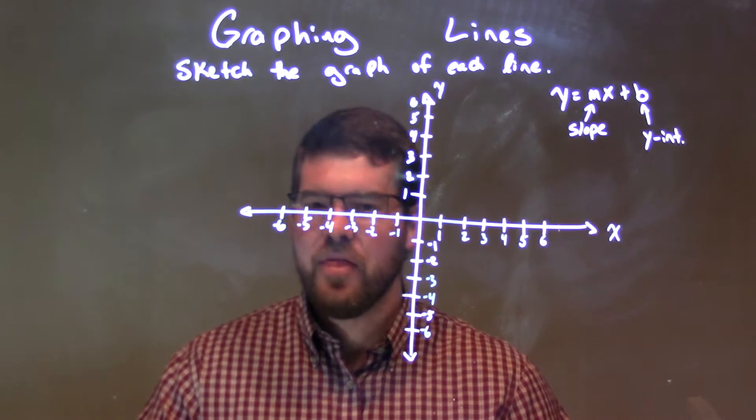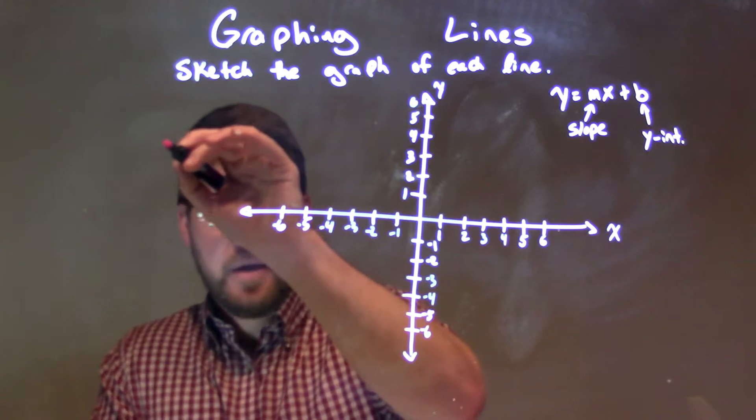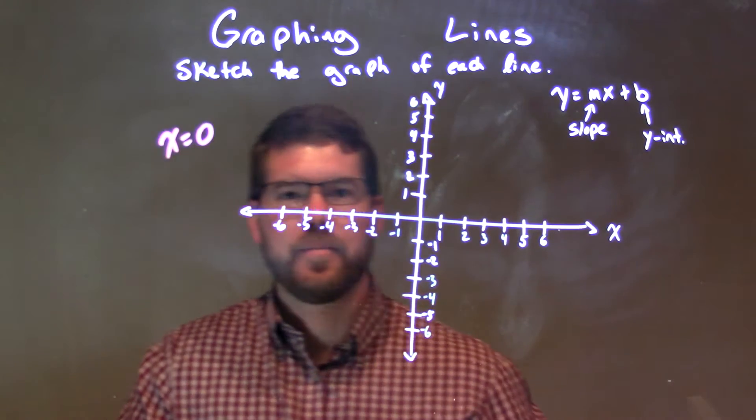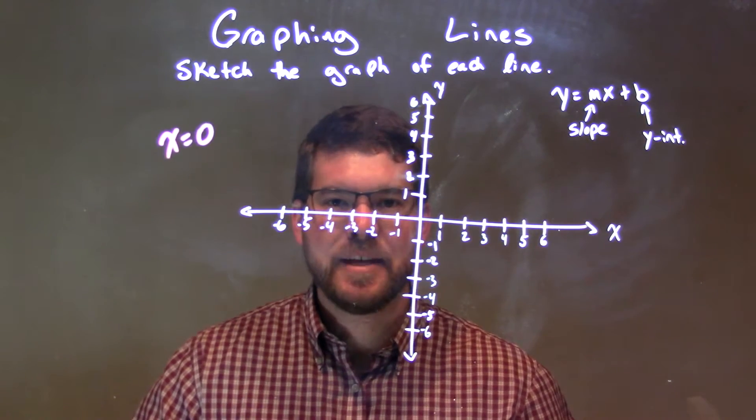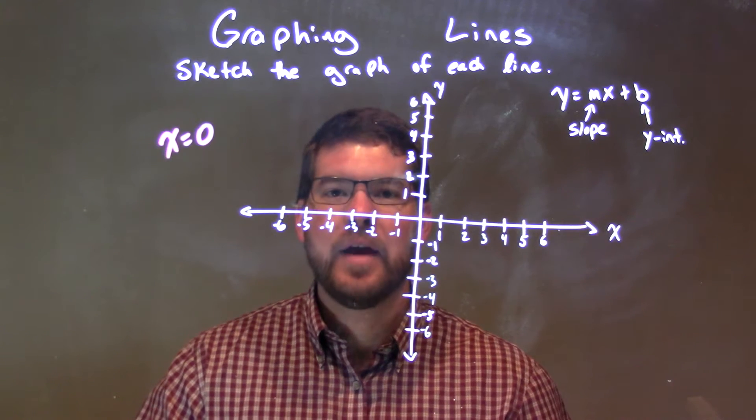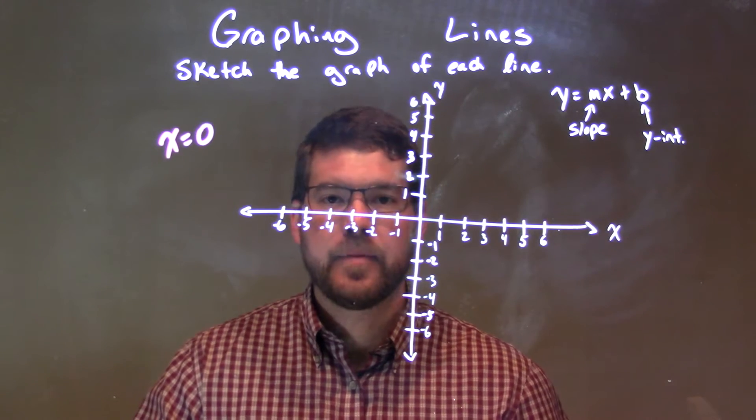If I was given this equation, x equals 0. All right, so when x equals 0, we have a vertical line, a vertical line.